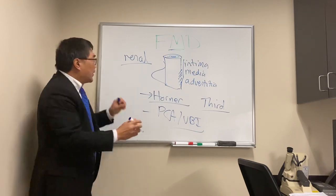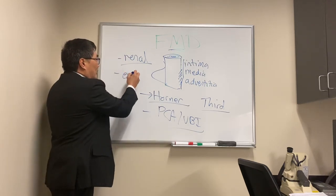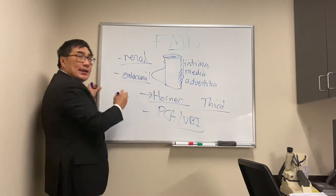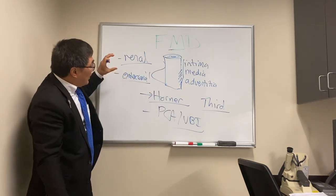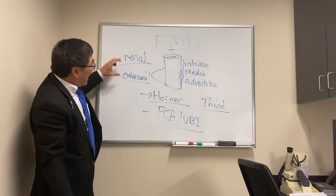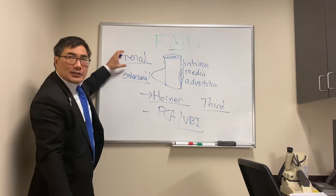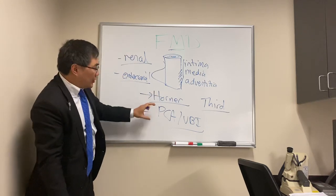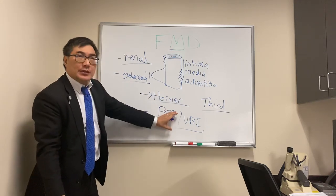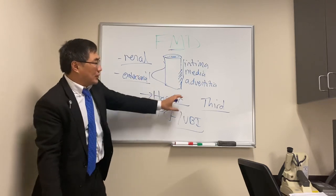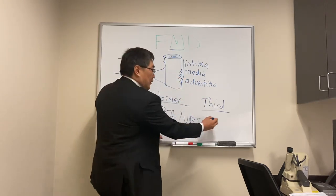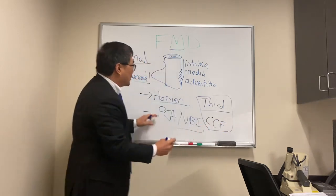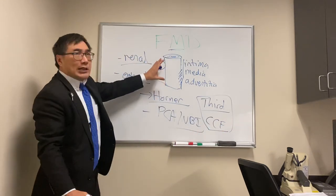You should know that FMD can affect both the renal arteries — meaning you can get renovascular hypertension — and the extracranial arteries in the head and neck. That's why this combination of findings — renovascular hypertension with a Horner's, or with a vertebral dissection, carotid dissection, or third nerve palsy — should make you think FMD.